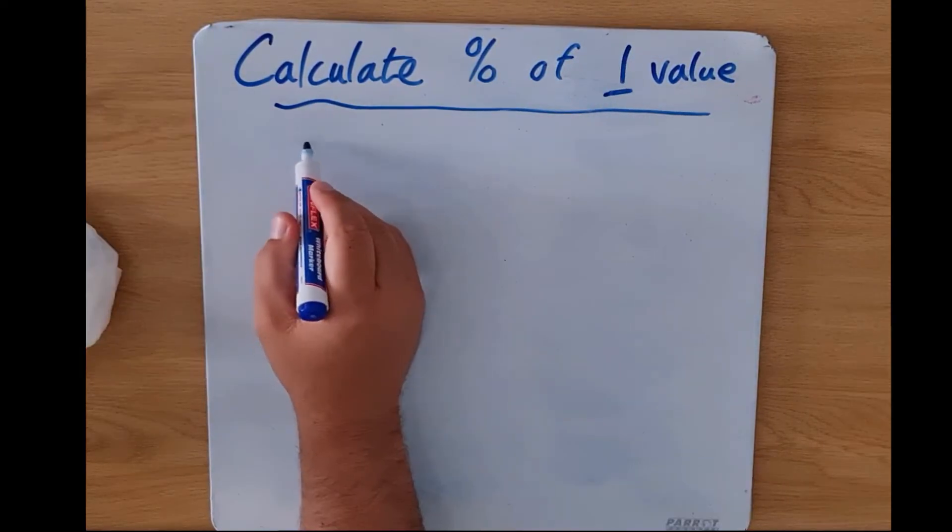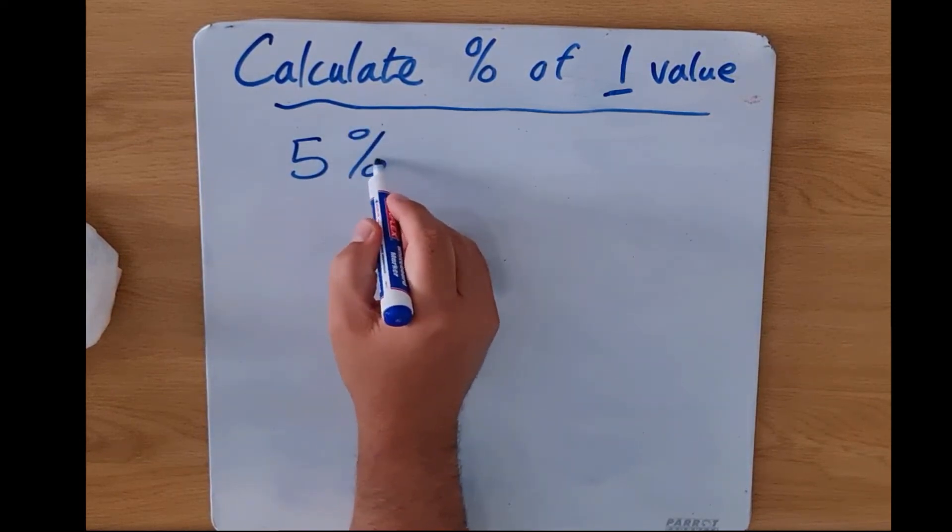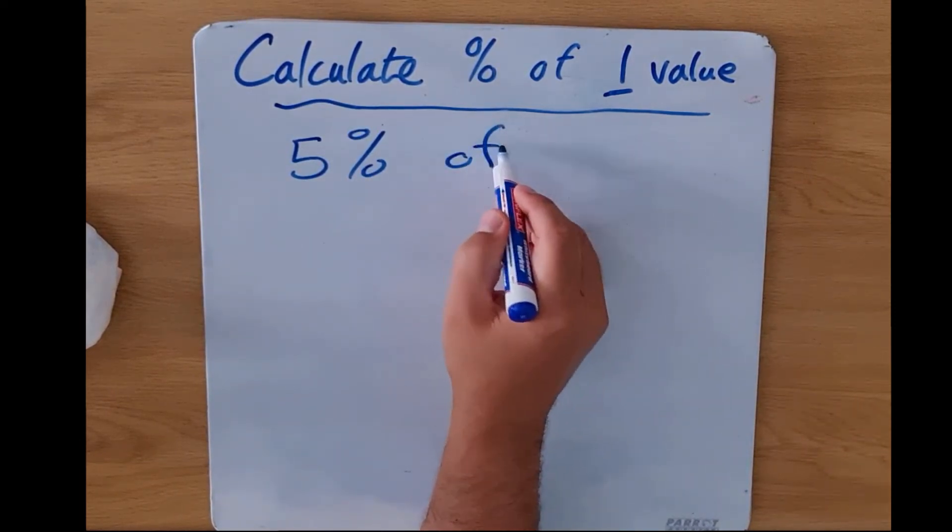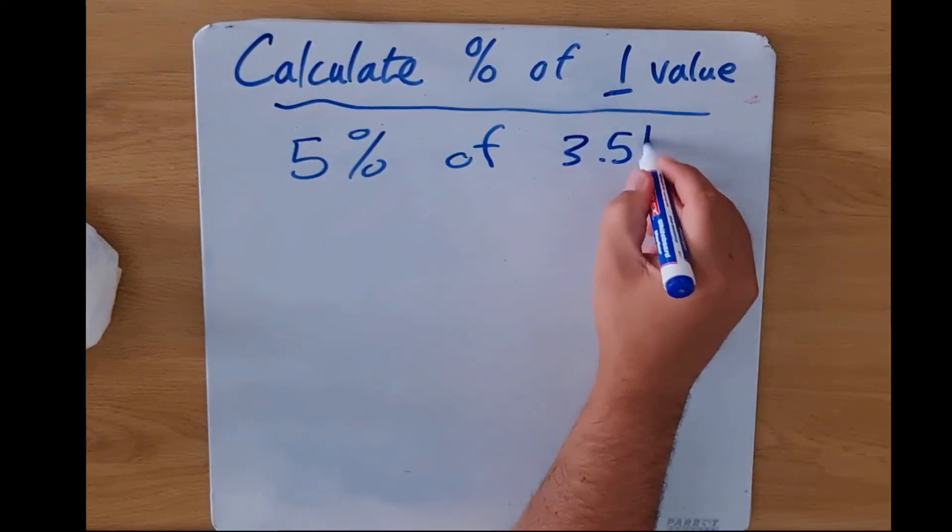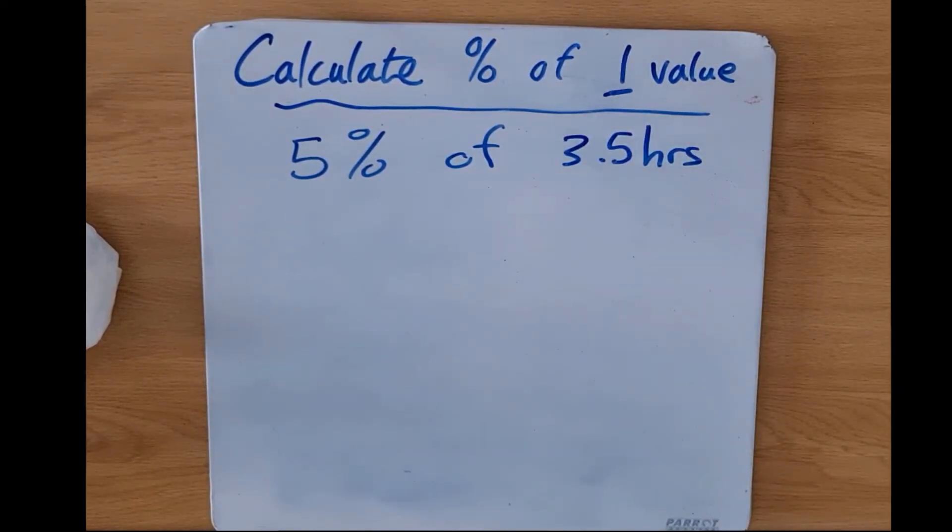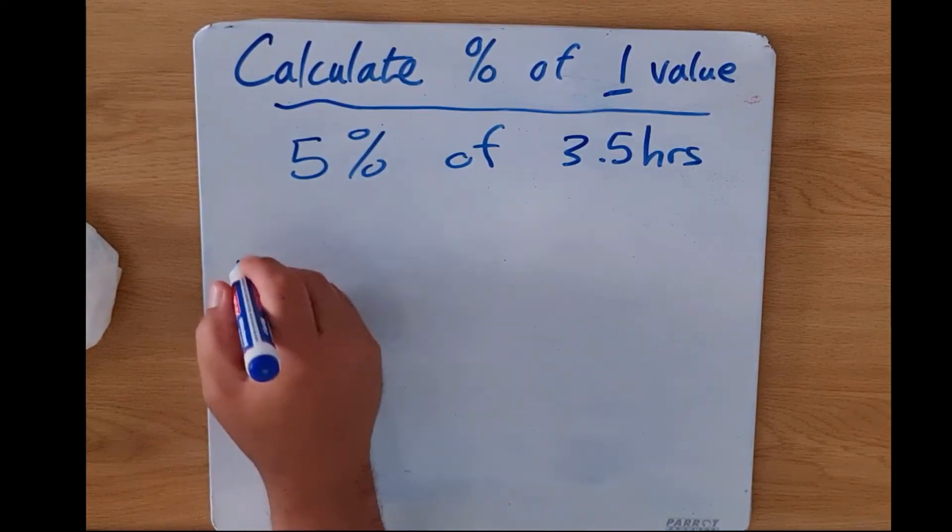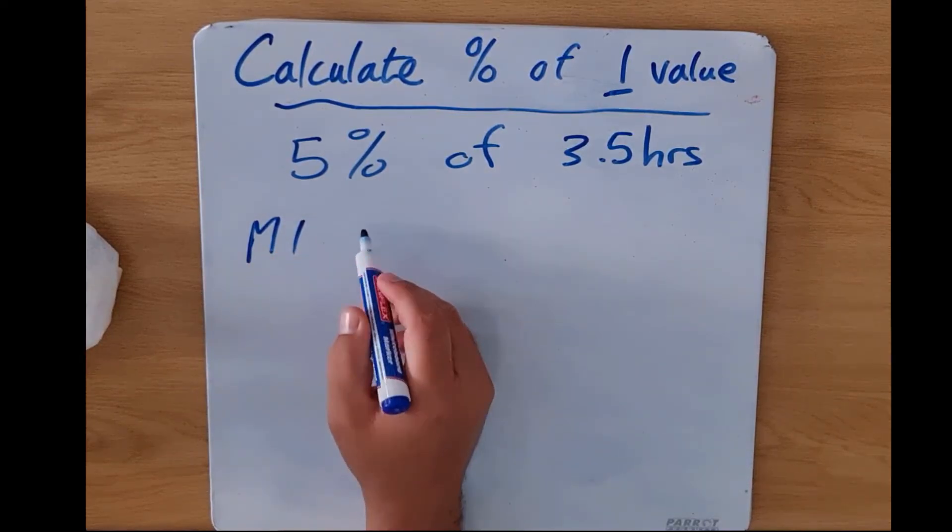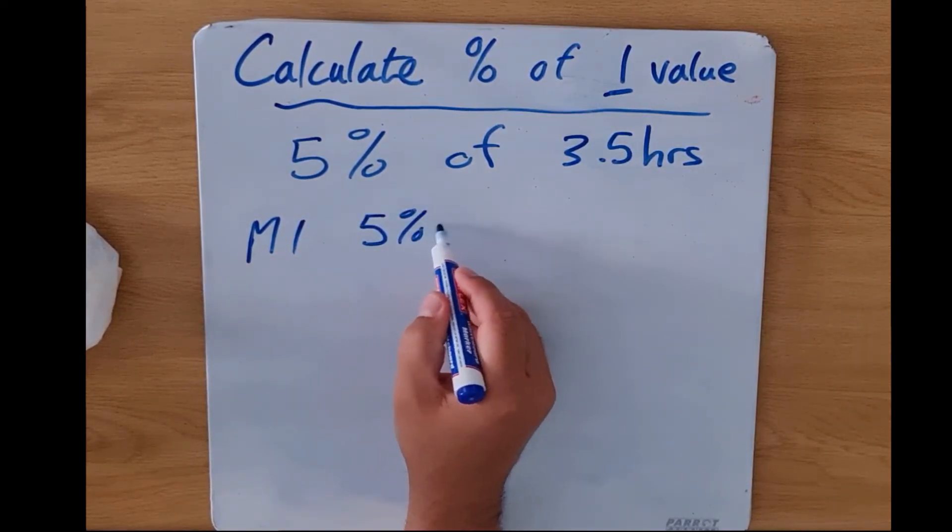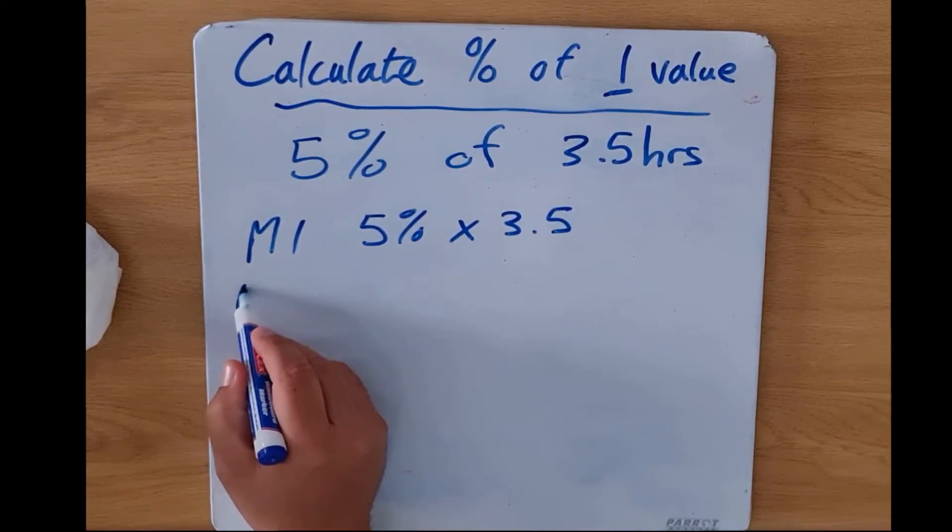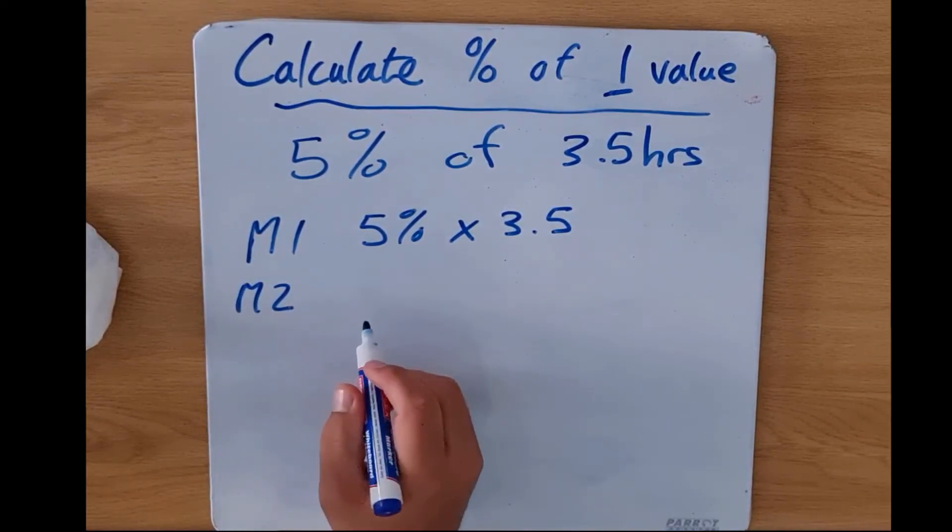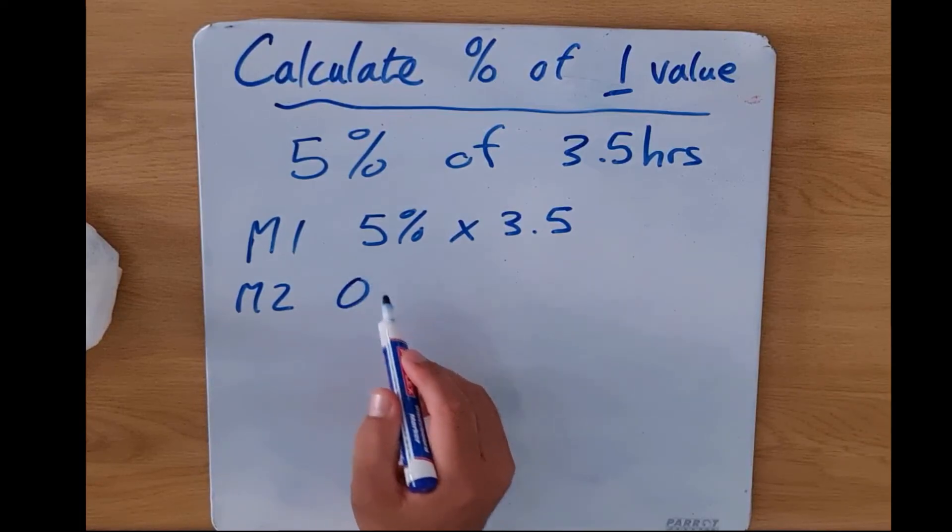They want 5% of - which usually tells us multiplying - 3.5, and this time it's hours. It's not a monetary figure, we're now looking at 3.5 hours. So again, what does method one tell us? It tells us to say 5% multiplied by 3.5. Method two tells us to go the decimal route, so remember it's 5%, so it'll be 0.05 multiplied by 3.5.